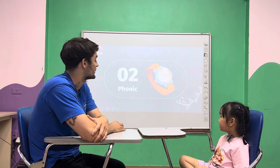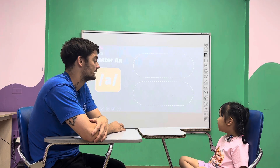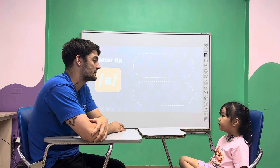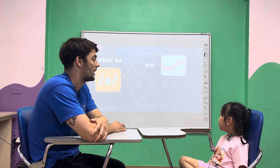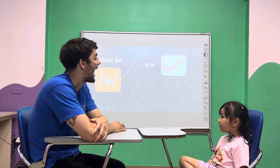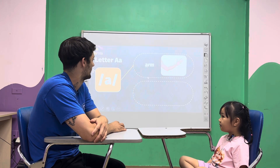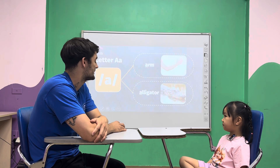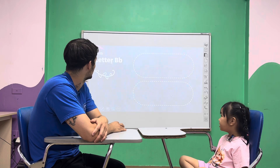Now let's talk about phonics. Letter A. A is for A. This is? A. This is? Alligator. Alligator.